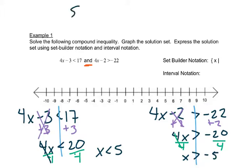So our set builder notation would just list those two pieces. We would have x is less than 5 and x is greater than negative 5.